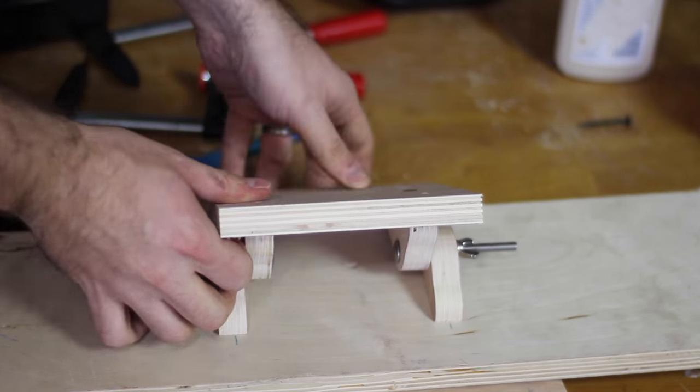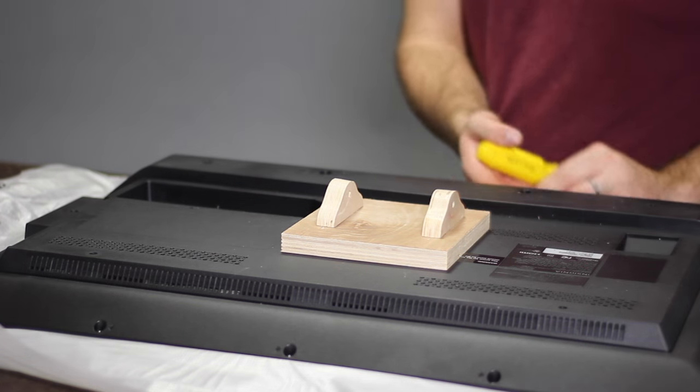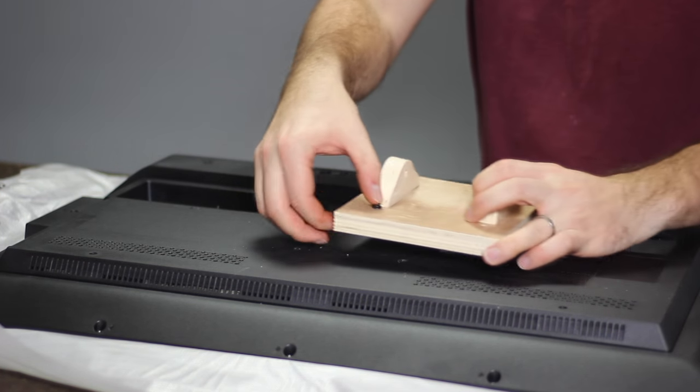Remove the two carriage bolts and separate the two sides of the mount. Attach the mount to the TV using one and a half inch screws. Our TV uses M8 screws.